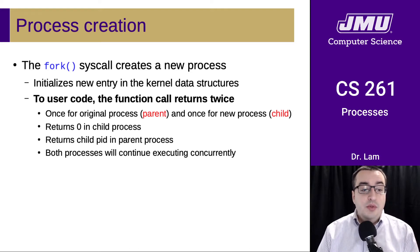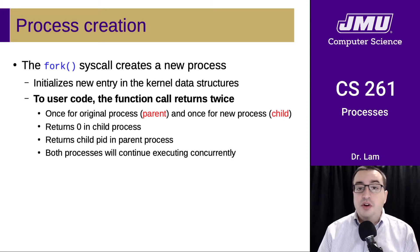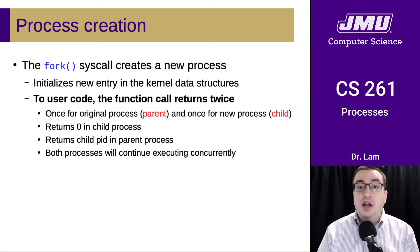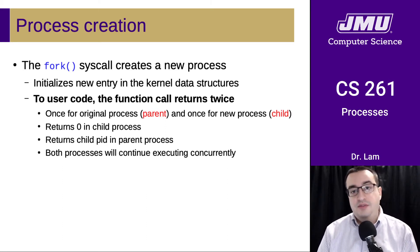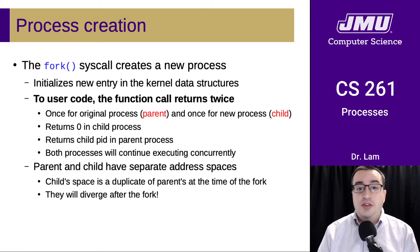The fork system call will return a different value, and this is how you can determine in code after the fork whether you're in the child process or the parent process. If the function returns zero, then it's the child process. If it returns a non-zero number, then you know it's the parent process. The number it actually returns is going to be the process ID of the child, which the parent can use to monitor that process if it wishes. But both processes will continue to execute concurrently.